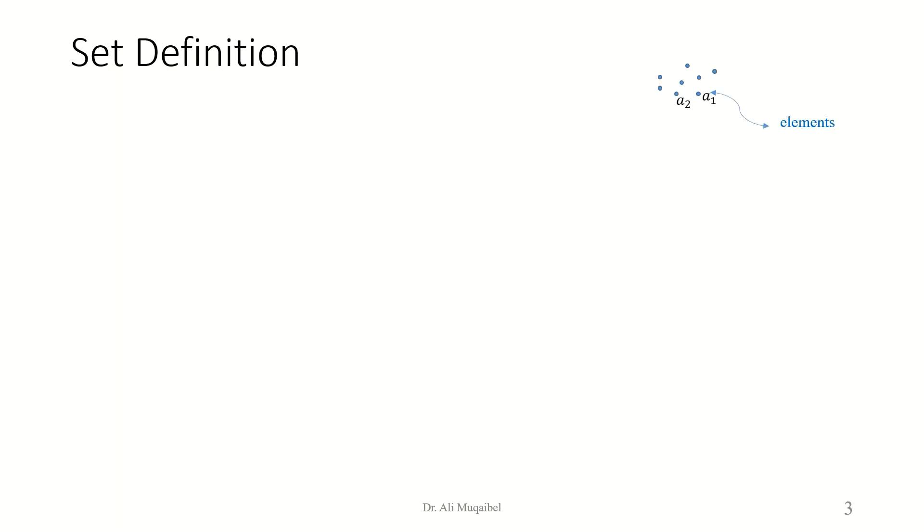Now, the basic thing we have is the elements. We have different elements. These elements, if we combine them together, we form what we call a set. So elements grouped together form a set. And then, if we have a group of sets, we create what we call a class.